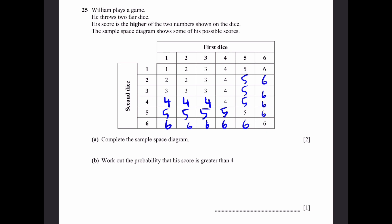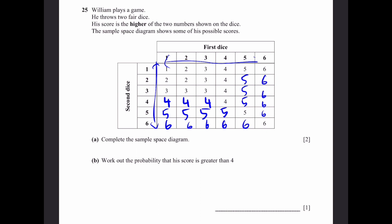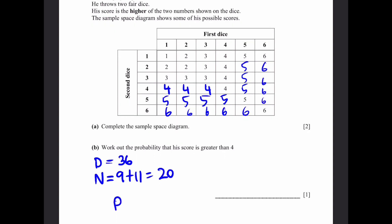Part b: find the probability that his score is greater than 4. There are 36 total outcomes (6 rows × 6 columns). Count the 5s and 6s: there are 9 fives and 11 sixes, giving a numerator of 20. So the probability is 20/36, which simplifies by dividing by 4 to give 5/9.